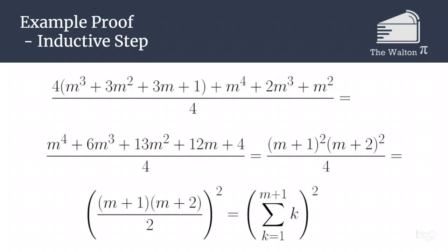So that entire fraction, the m to the fourth plus 6m cubed plus 13m squared plus 12m plus 4 all over 4, can be simplified down to m plus 1 times m plus 2 all over 2 all squared.